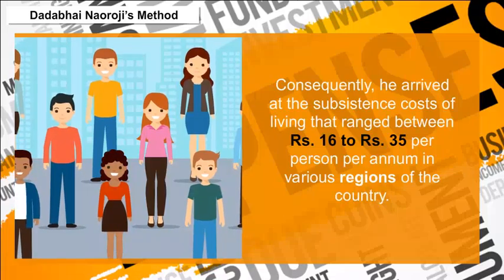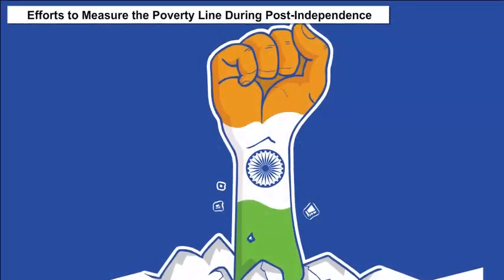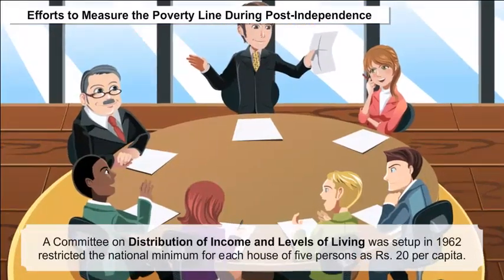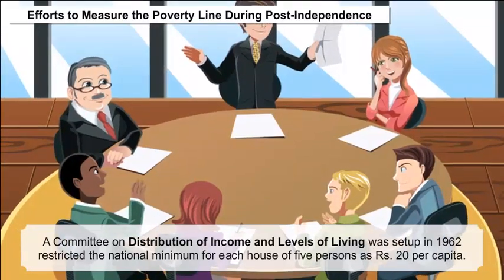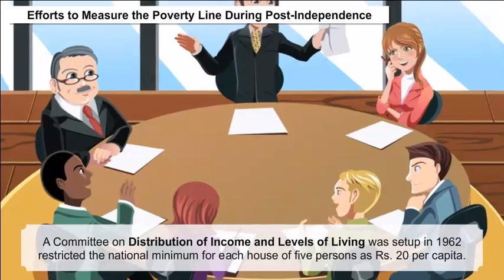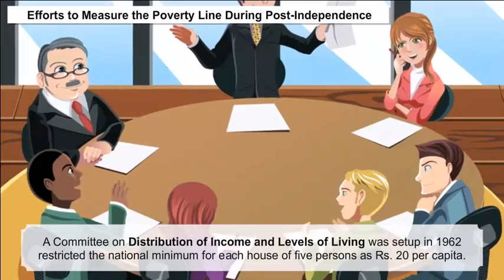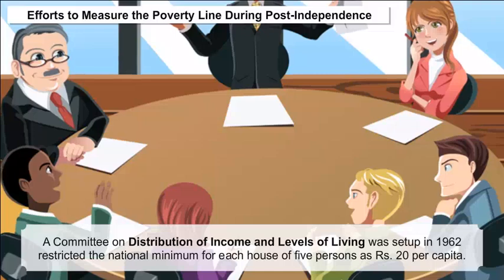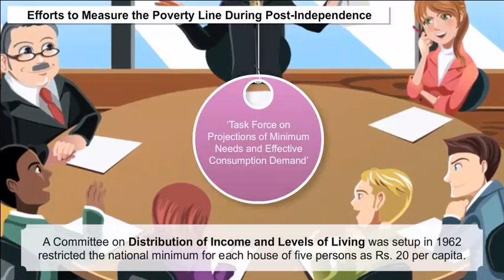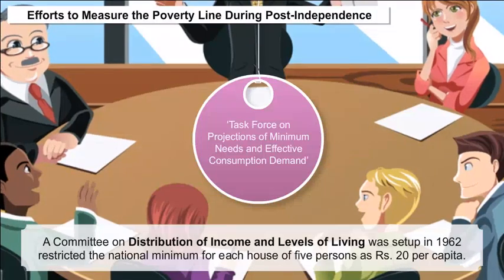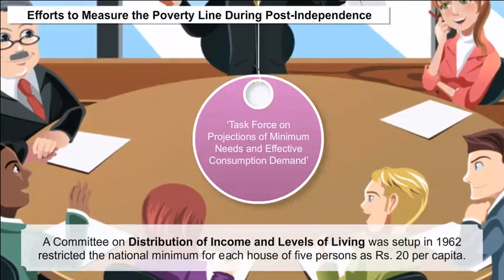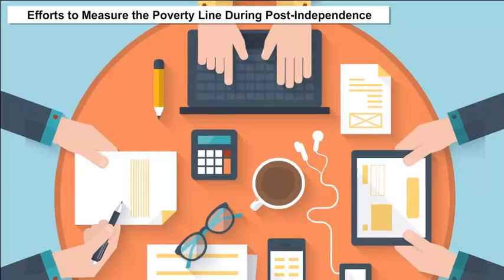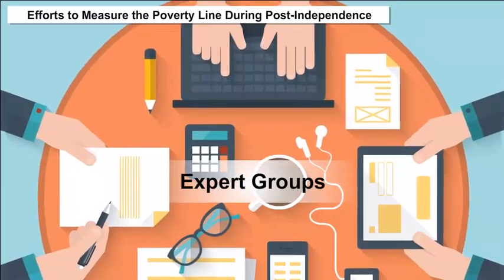Efforts to measure the poverty line during post-independence: A Committee on Distribution of Income and Levels of Living was set up in 1962, which restricted the national minimum for a household of 5 persons at 20 rupees per capita. In 1979, the Task Force on Projections of Minimum Needs and Effective Consumption Demand was formed, and during 1989 and 2005, the government constituted expert groups for the same purpose.